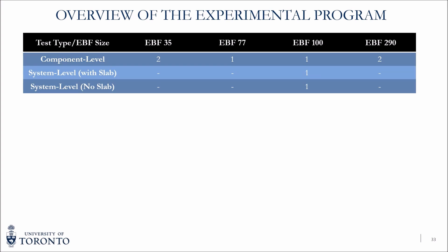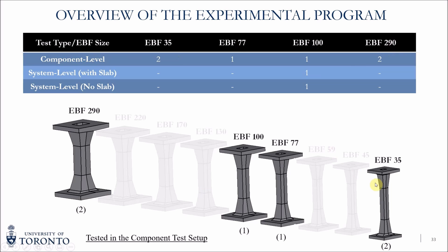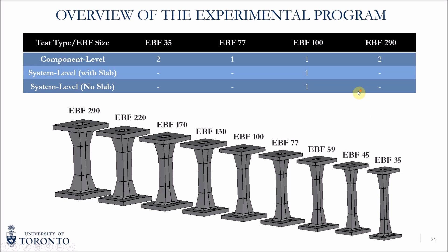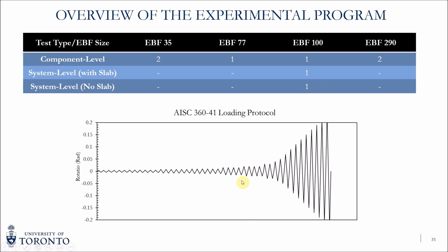In the first set of tests, we carried out component-level tests on two EBF 35s, one EBF 77, one EBF 100, and two EBF 290s. For the frame setup, we chose to do two EBF 100s — the medium size link — once with the slab and once without the slab. For the loading protocol, we used the AISC 341 loading protocol, which is always used for the pre-qualification of links in EBFs.